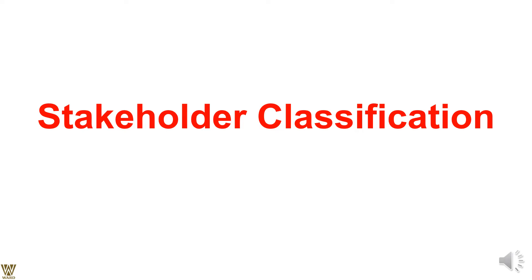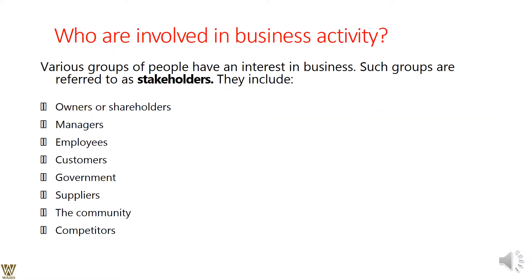Welcome everyone to this presentation on the classification of stakeholders. We would like to dissect stakeholders into various categories. The very first slide tells us who the various groups of people of interest are — the stakeholders. They are: owners, managers, implementers, employees, team members, customers, end users, government, regulators, suppliers, vendors, community, the public, society at large, and last but not least, competitors.